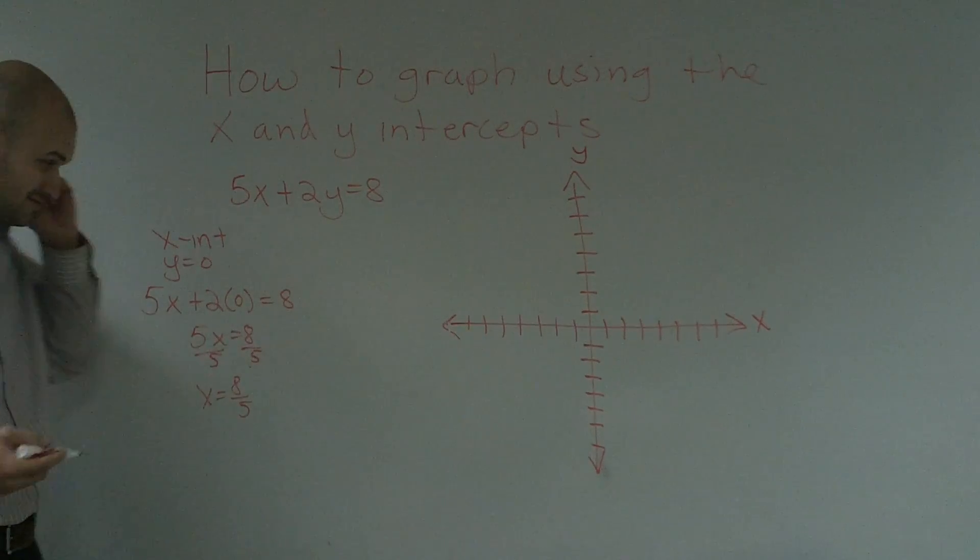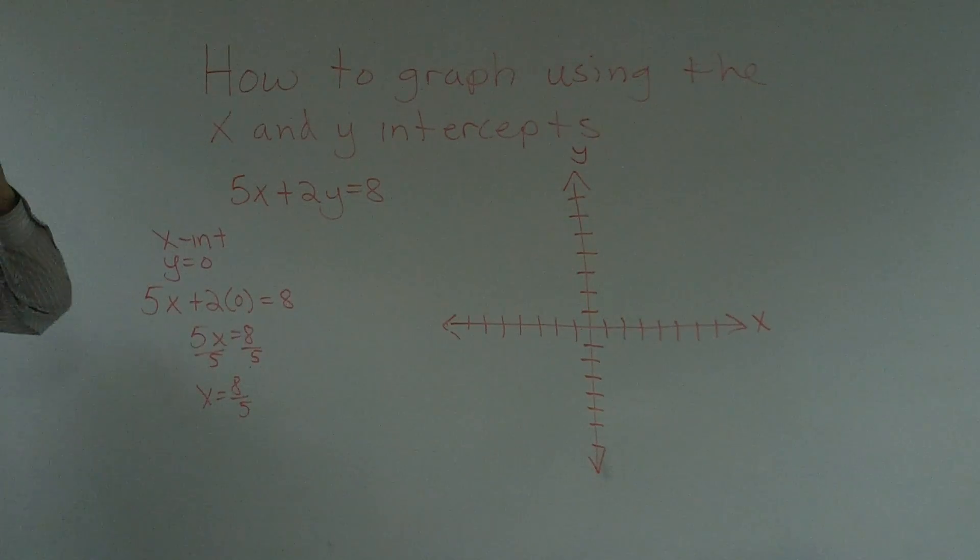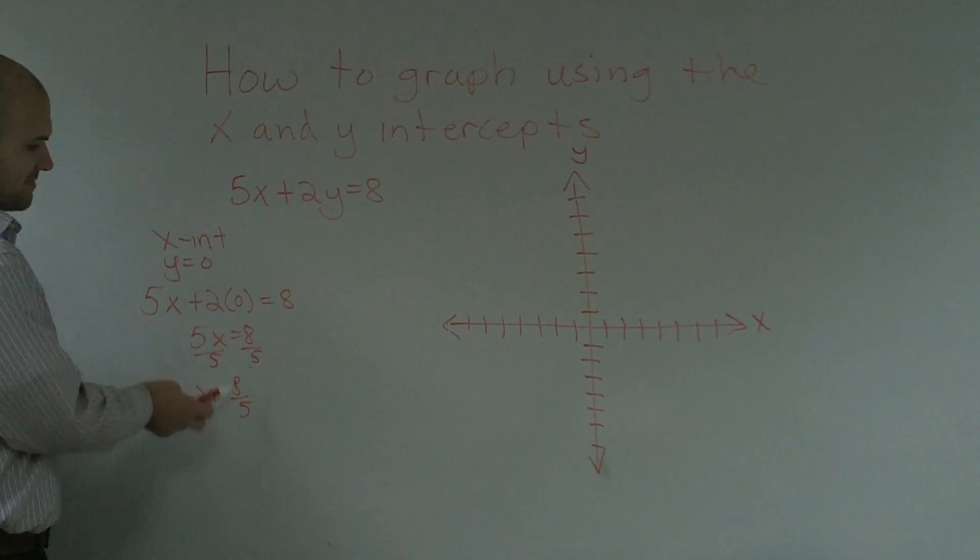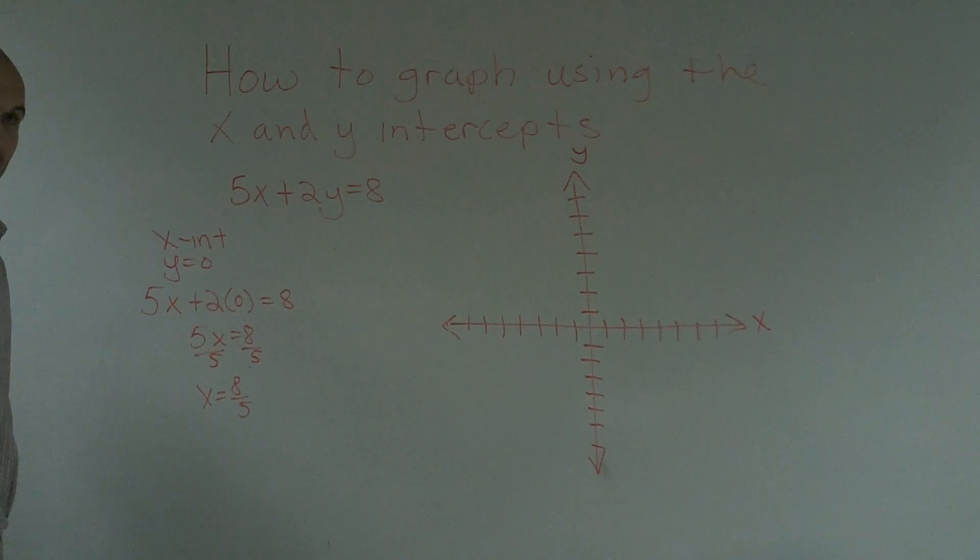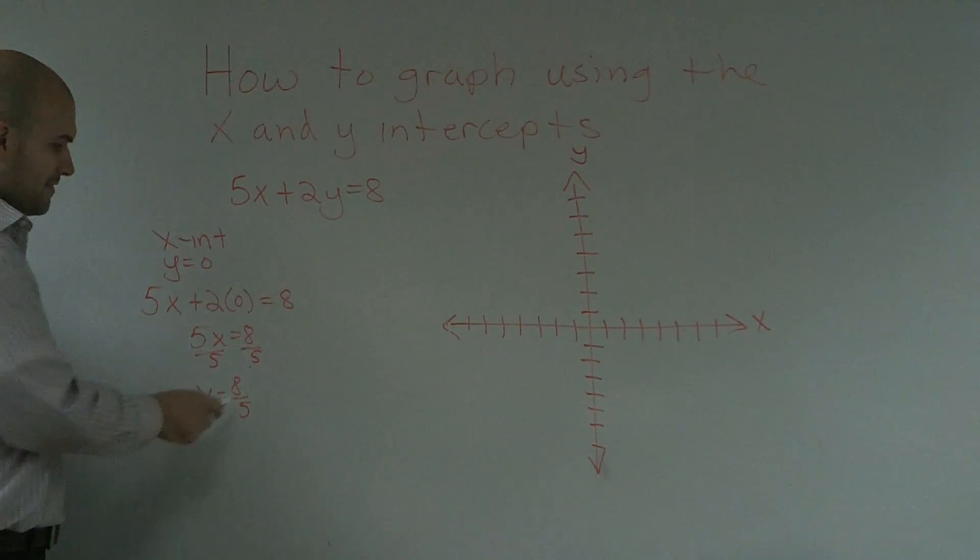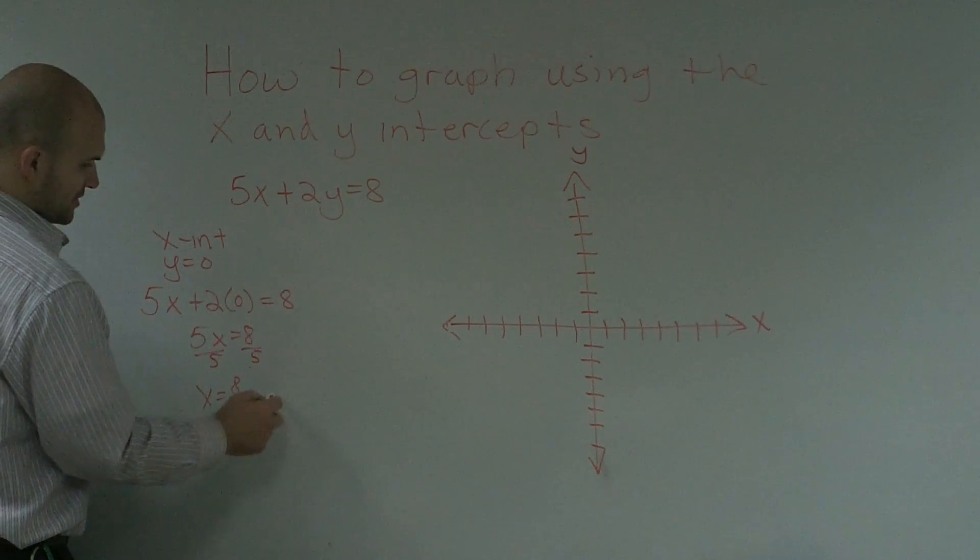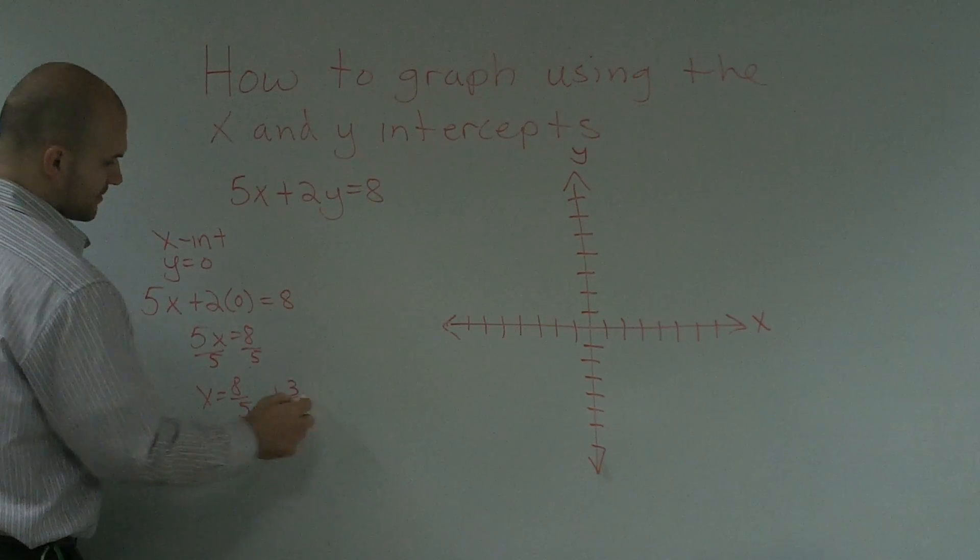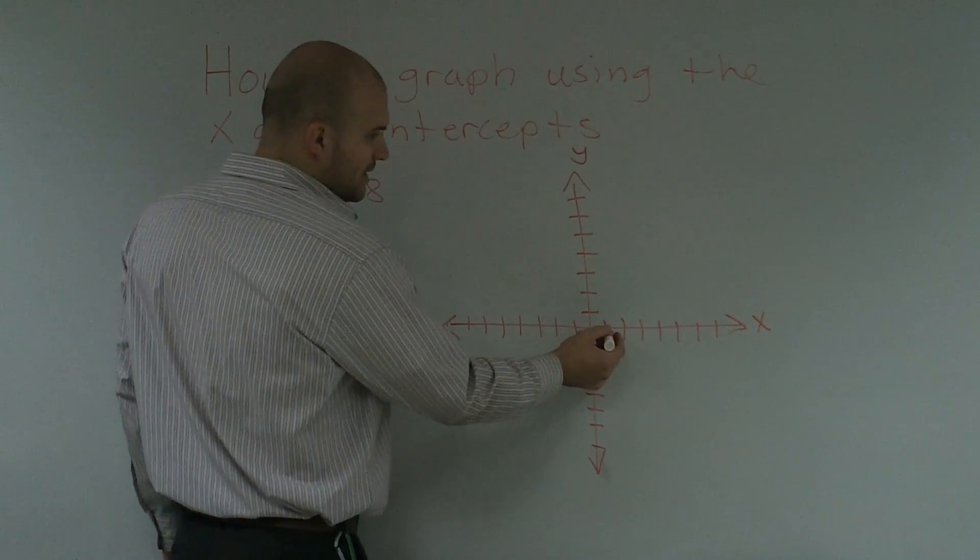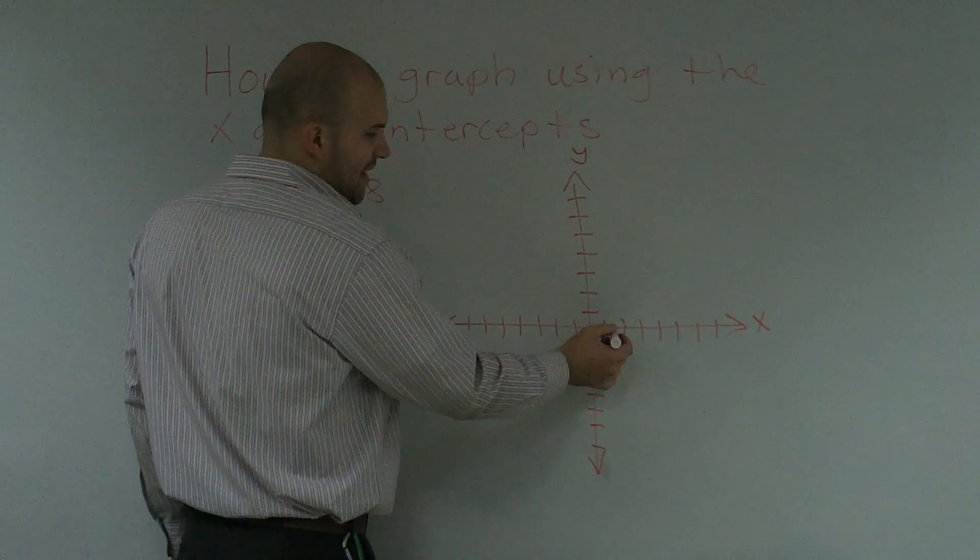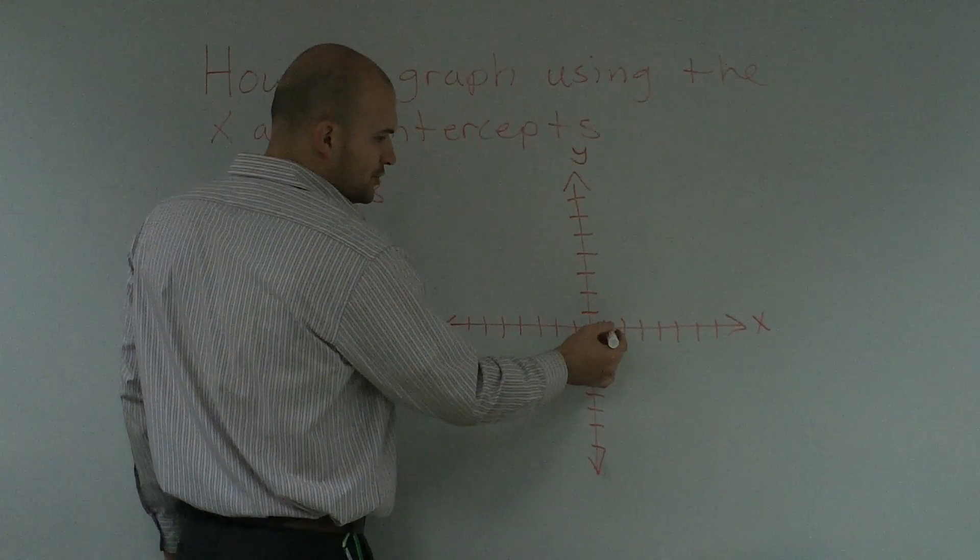Now, you might initially say, well, that's going to be kind of hard to graph. How am I going to really do that? Well, you can kind of look at that and say, well, 5 is going to go into 8 one time, and there's going to be a remainder of 3. And then, 3 fifths is roughly, so you're going to pretty much go 1 and 3 fifths. So I need to go over 1, and then if you kind of broke these down into 5 equal sections, you'd go over 3.